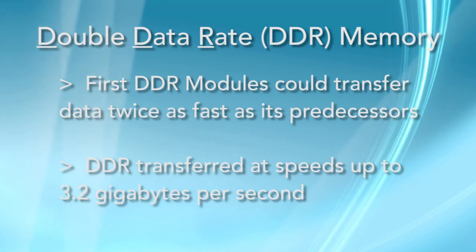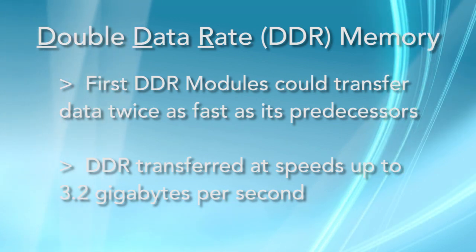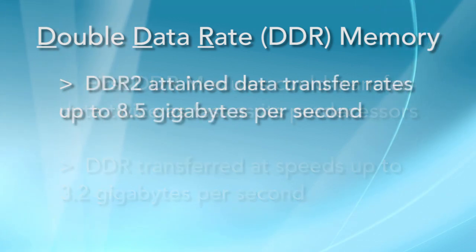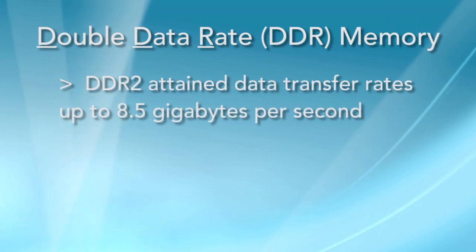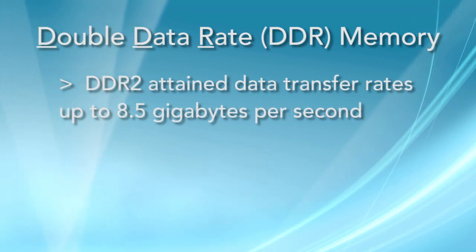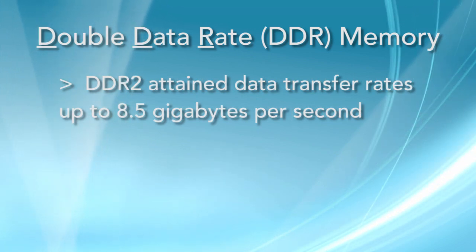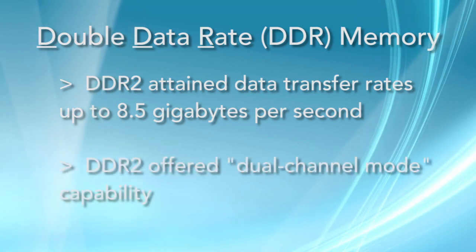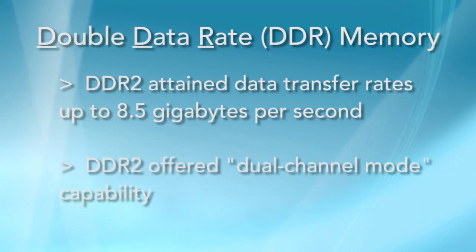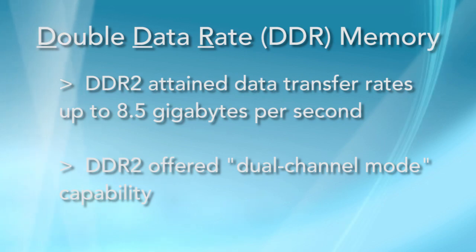This was a huge improvement. But just a few years later, DDR2 came along, achieving transfer speeds up to 8.5 gigabytes per second. In addition, DDR2 memory can be installed in pairs to run in dual channel mode, increasing data throughput even further.